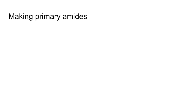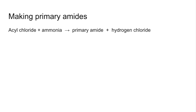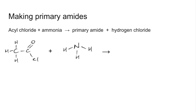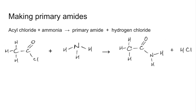Moving on to the two types of amides. We'll start with primary amides. Acyl chlorides react with ammonia to produce a primary amide and hydrogen chloride. Drawing it in displayed formula, we take the HCl and put the NH₂ that's left onto the acyl group. This is a primary amide because the nitrogen is bonded to one carbon. This compound is called ethanamide.